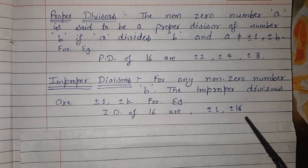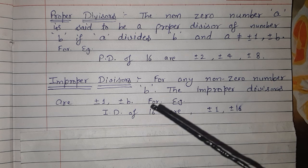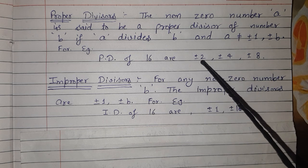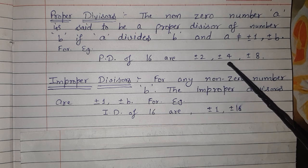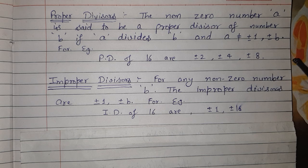So to summarize: the improper divisors of 16 are ±1 and ±16, and the proper divisors are ±2, ±4, and ±8.